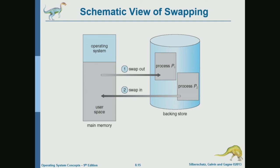Swapping means: this is our memory. We have the operating system and user memory. If the system needs to run process two and memory is full, we need to make some space available. The system may do this by swapping out process P1 — copying it to disk. With this primitive scheme, we are copying the whole memory image of a process from memory to disk, and swapping in means copying from disk to memory.